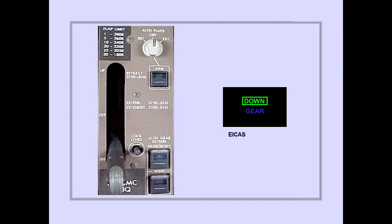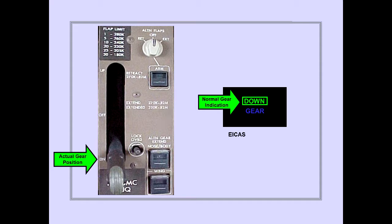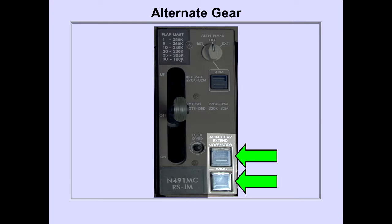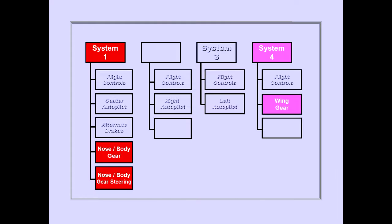The landing gear position is displayed on ICAS. For normal operations, a single box for landing gear position is displayed. The landing gear operation is controlled by two alternate gear extend switches. Hydraulic systems one and four power the landing gear systems. Hydraulic system one powers nose and body gear actuation and nose and body gear steering. System four powers wing gear actuation.